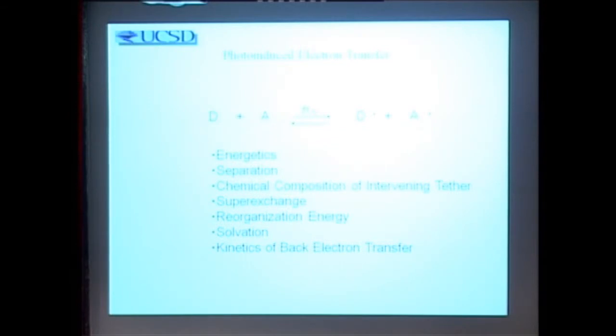I began thinking about the interaction of light with matter. In thinking about a very simple interaction: if a donor, which I've called D — a molecule which is electron-rich — interacts with an acceptor, which I've called A — a molecule which is electron-deficient — plus-minus combinations will bring these two together in a way that you can have different products. You can look at the energetics, the separation between them, the composition of something that might covalently bond the donor and acceptor, superexchange, reorganization and solvation, and the exchange of an electron in one direction or the other.